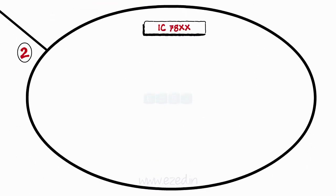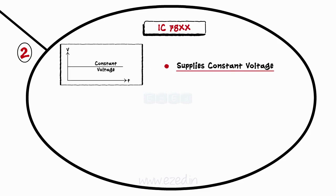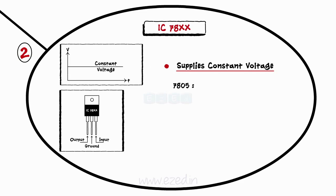IC78xx is a series of voltage regulators which supplies a constant positive voltage. Last two XX represent the output voltage value. For example, 7805 provides an output of 5 volts, 7812 provides an output of 12 volts. It has three terminals as input, output and ground.